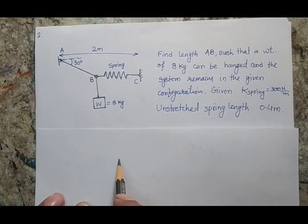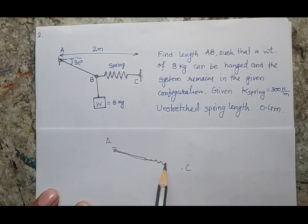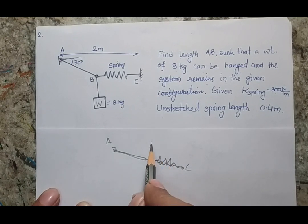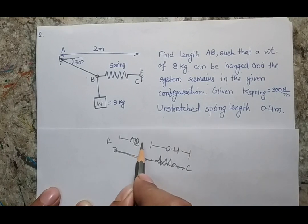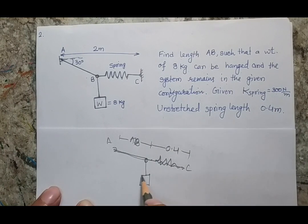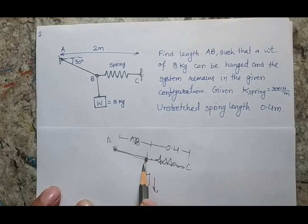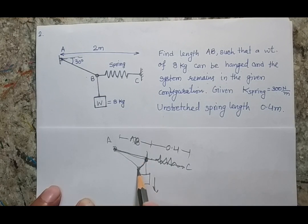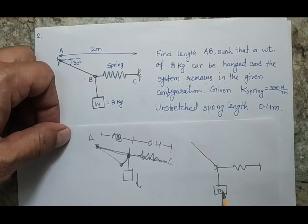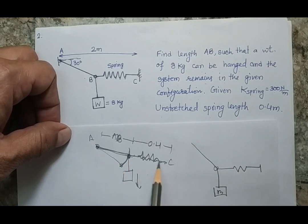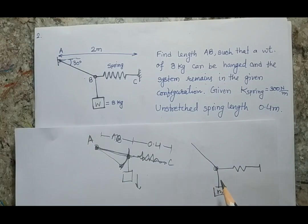Initially with no weight, point A, point C, the bar and spring are connected — the spring is unstretched at 0.4 meters. When a weight is applied, the gravitational force causes this point to move downward, rotating the arm about its pivot. The system acquires a new configuration where bar AB rotates to a position making 30 degrees with the horizontal — this is the given configuration, and we need to find length AB.